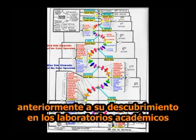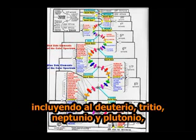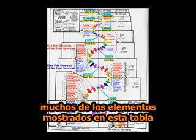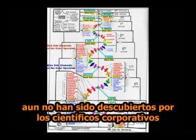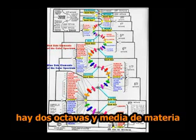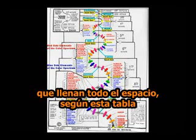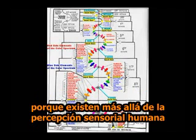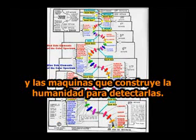Walter Russell was able to predict many elements before they were discovered in academic laboratories, including deuterium, tritium, neptunium, and plutonium. Many of the elements shown in this table have still not been discovered by corporate scientists. There are two and a half octaves of matter which fill all of space according to this table, which are unknown in academic circles because they exist beyond the range of human sensory perception and the machines mankind builds to sense them.